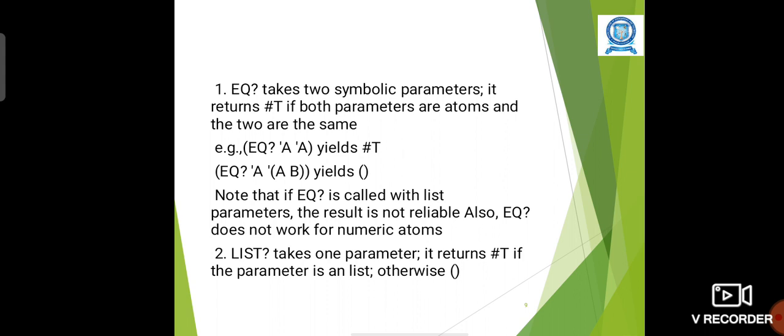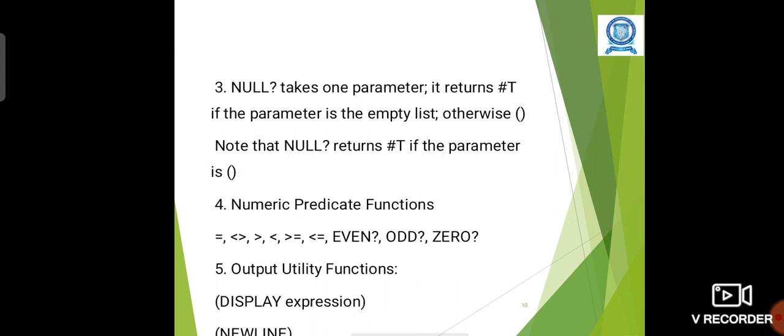list? takes one parameter and returns true if the parameter is a list. Otherwise, it will return false. null? takes one parameter. It returns true if the parameter is an empty list. Otherwise, it will return false.